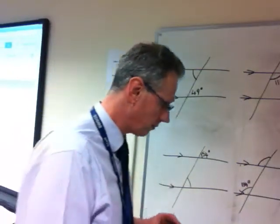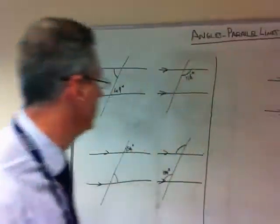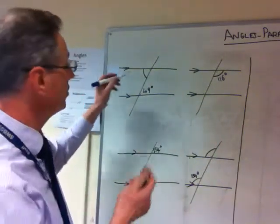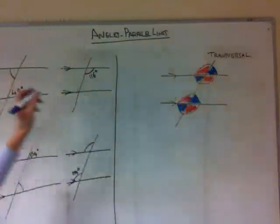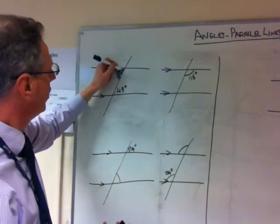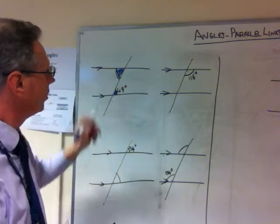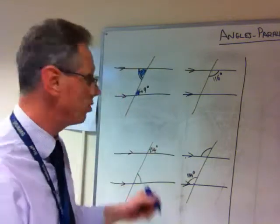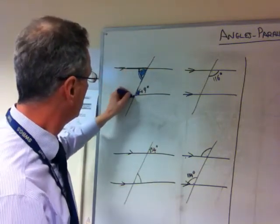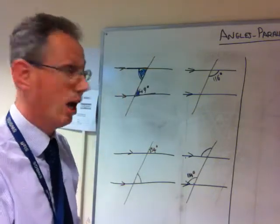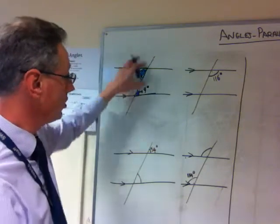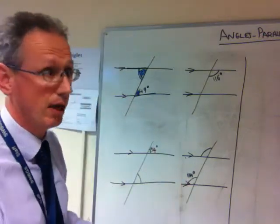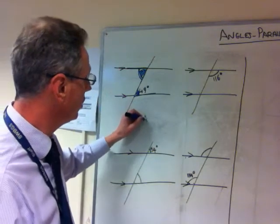Let's look at the key words. From our diagram, we can see that certain angles are in the same position at each parallel line and are therefore the same. This forms a Z shape. Some people used to refer to these as Z angles, but that's not the terminology we use in GCSE maths anymore. The correct, acceptable term is alternate angles.